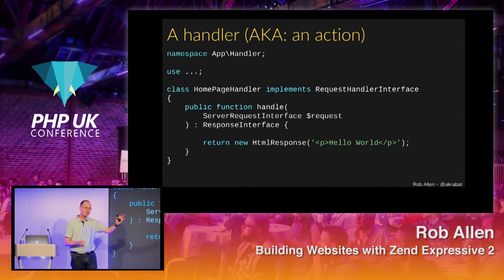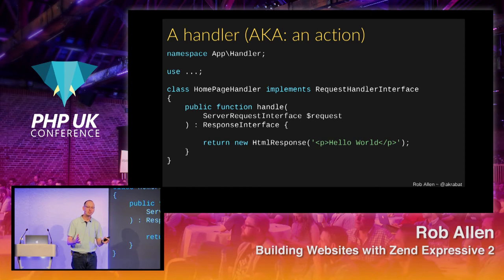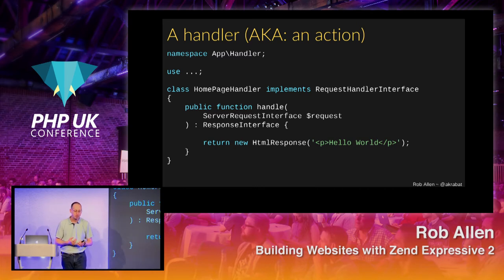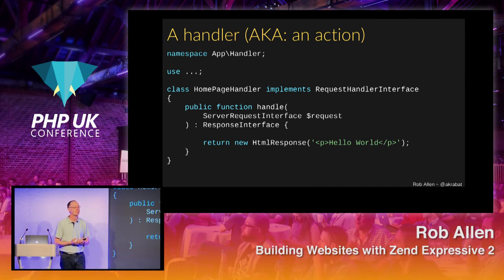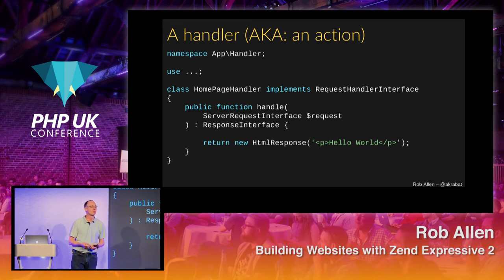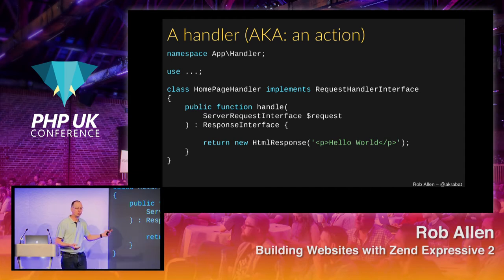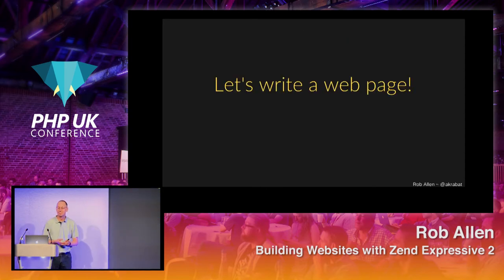Your action is at the end of the pipeline chain, so you have to return the response containing the HTML you want to send to the browser. As part of the PSR-7 implementation within Expressive, there's an HTMLResponse object — it sets content-type to HTML, sets a 200 status code, and you put your HTML in as the first parameter of the constructor. We now have the world's simplest Hello World application within Expressive.